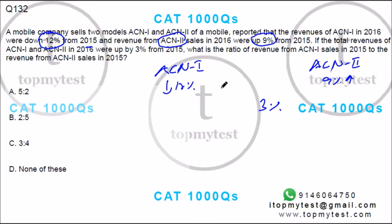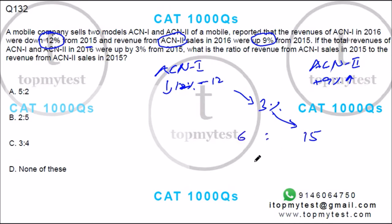In 2015. So this is a drop of 12, this is a rise of 9. If you use allegation, 9 minus negative 12 gives us 15 on one side, and 3 minus negative 12 gives us 6 on the other. This gives us a ratio of 2 is to 5. Option B is your correct choice.